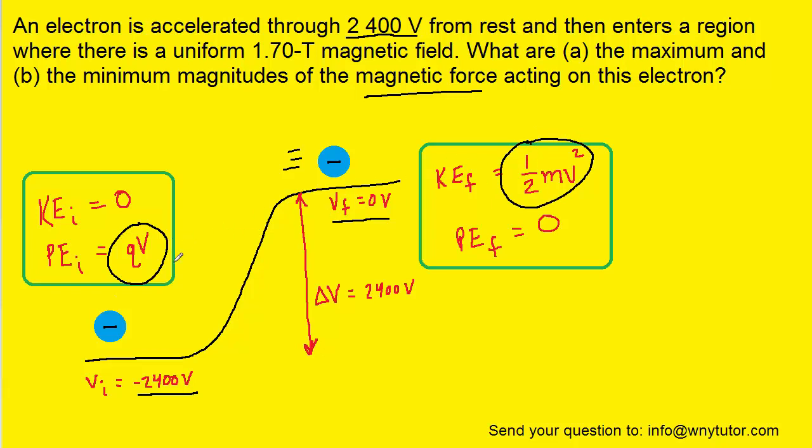So we're going to set those two energies equal to each other according to the conservation of energy. So here we have done so, and we want to solve this equation for the speed of the electron, so we can move on to solving parts A and B. So to do that, we can begin by multiplying both sides of the equation by two.